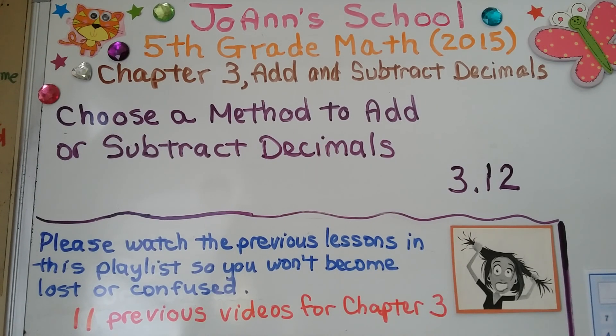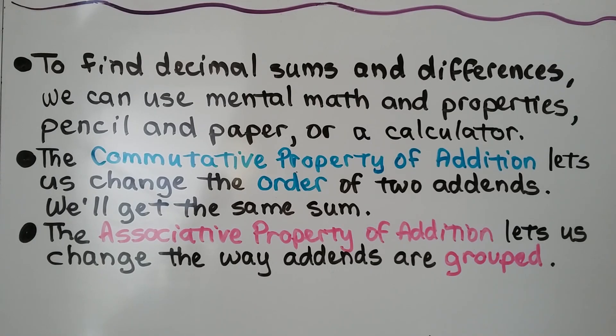Lesson 3.12: Choose a method to add or subtract decimals. To find decimal sums and differences, we can use mental math and properties, pencil and paper, or a calculator.